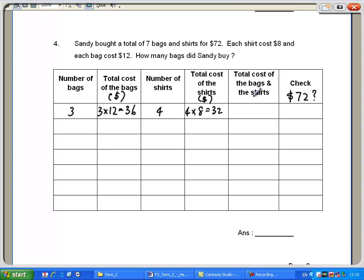And the total cost, $36 plus $32. That would give us $68. Well, she actually spent $72. So $68 is the wrong guess. Too low. So, we need to increase the cost.